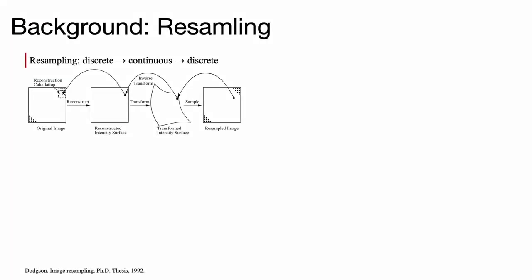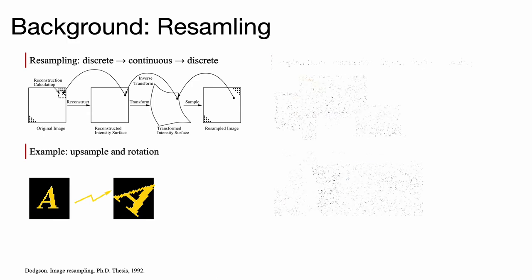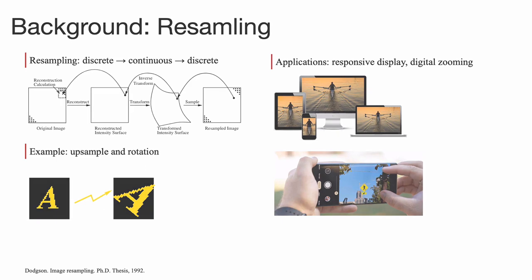Now, let us dive into the whole story. Image resampling aims to produce another discrete image from a given discrete image, where the produced image looks like it is formed by applying a continuous geometric transformation to the original image. Here, we show an example of upsampling and rotating a character. Image resampling enjoys various applications, ranging from digital zooming, optical distortion compensation, responsive online content streaming, and photo editing.